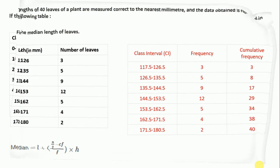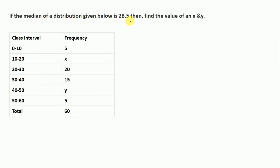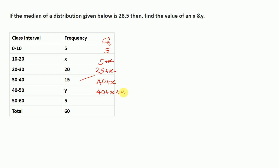Question 3: If the median of a distribution given below is 28.5, find the value of x and y. We find the cumulative frequency: 5, then 5 plus x, then 5 plus x plus 20 equals 25 plus x, then 25 plus x plus 15 equals 40 plus x, and then 45 plus x, and finally 45 plus x plus y. So we have found the cumulative frequency for all observations.